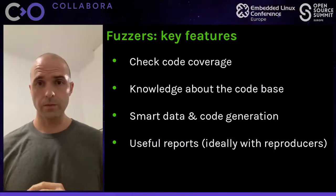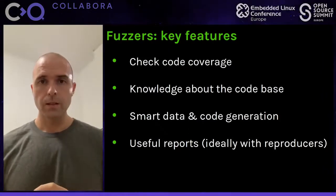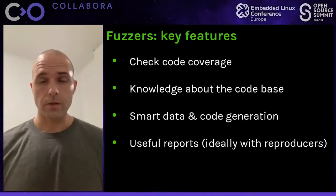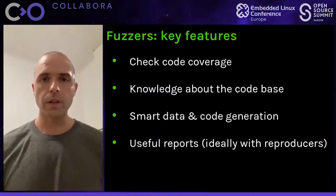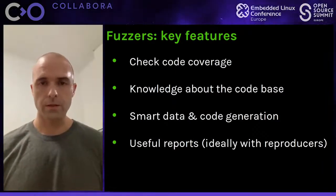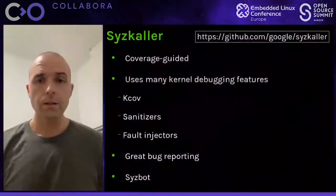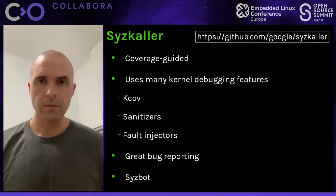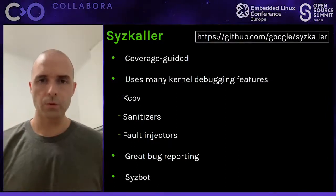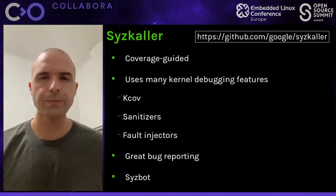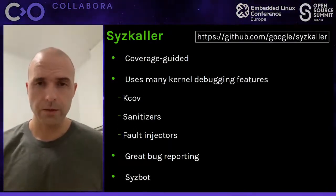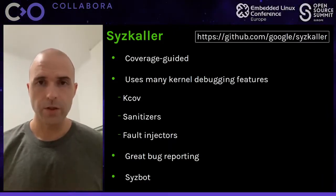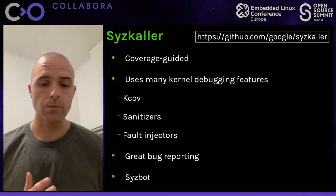Of all the kernel fuzzers available, Syzkaller is one of the most recent efforts and it's probably the most successful today. Syzkaller appeared in 2016, it was written by Dmitry Vyukov, and it has become one of the most important tools to make the kernel more robust and more secure. It's a coverage-guided fuzzer, and it makes use of many kernel debugging features to make the fuzzing process more efficient.